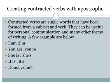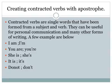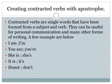Creating contracted verbs with apostrophe: contracted verbs are single words that have been formed from a subject and verb. They can be useful for personal communication and many other forms of writing. A few examples: I am becomes I'm; you are becomes you're; she is becomes she's; it is becomes it's; did not becomes didn't. These are the words we commonly use in our daily routine.